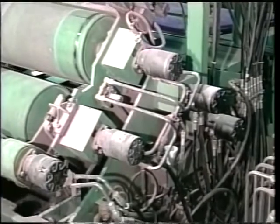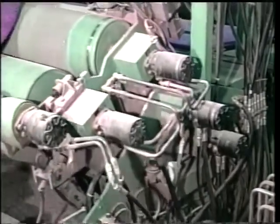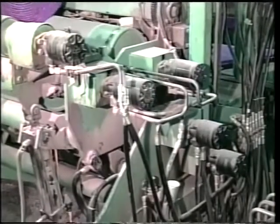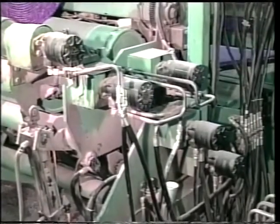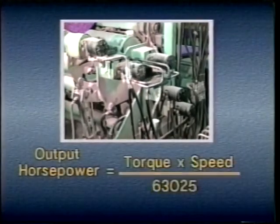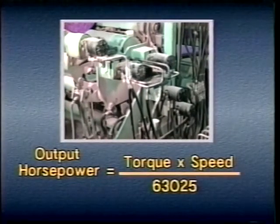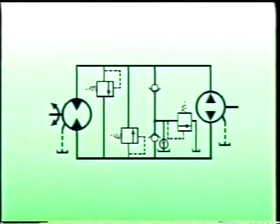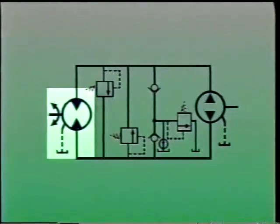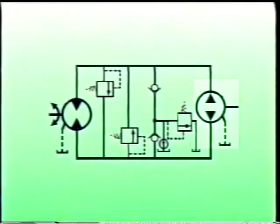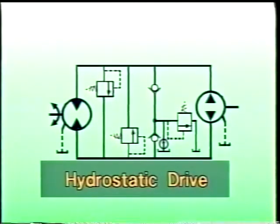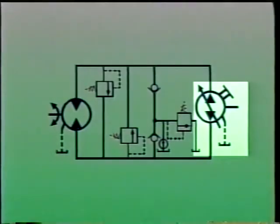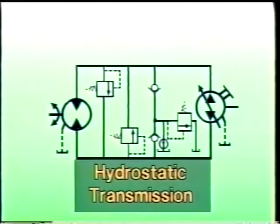Control of the torque and speed of hydraulic motors also permits control of horsepower, because torque and speed determine the work a motor can do in a given amount of time. Output horsepower is equal to torque times speed divided by the constant 63,025. When motors and pumps are combined in systems, it is possible to control torque, speed, and horsepower. If both the motor and the pump are constant displacement, these systems are usually referred to as hydrostatic drives. If either component has a variable displacement, the system is sometimes called a hydrostatic transmission.